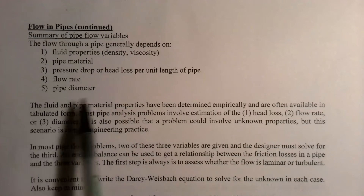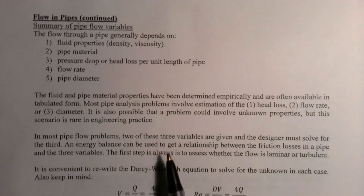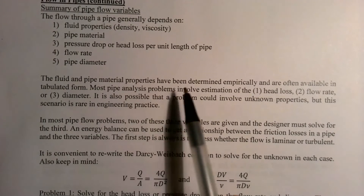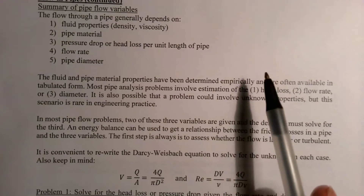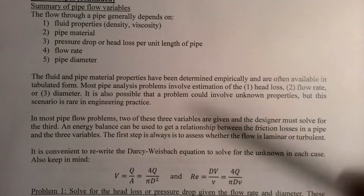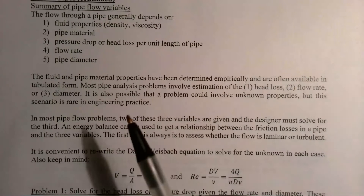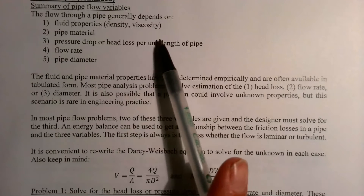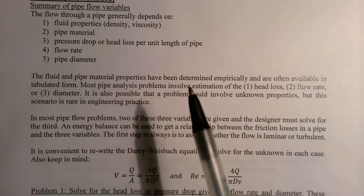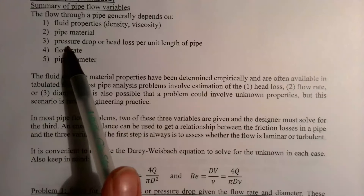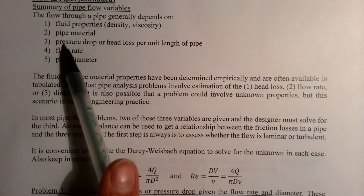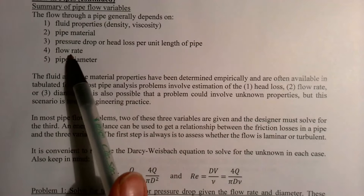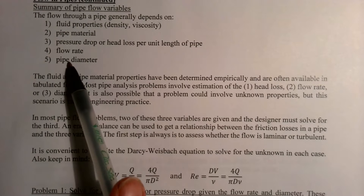In thinking about the kinds of problems we see, it's rare to solve for the first two things because those have often been done already. Unless you're working with a new material or fluid, most problems really fall into those last three types. They're listed in this order because the third one — head loss — is the easiest, the fourth is the next hardest, and the fifth — diameter — is the hardest to solve.